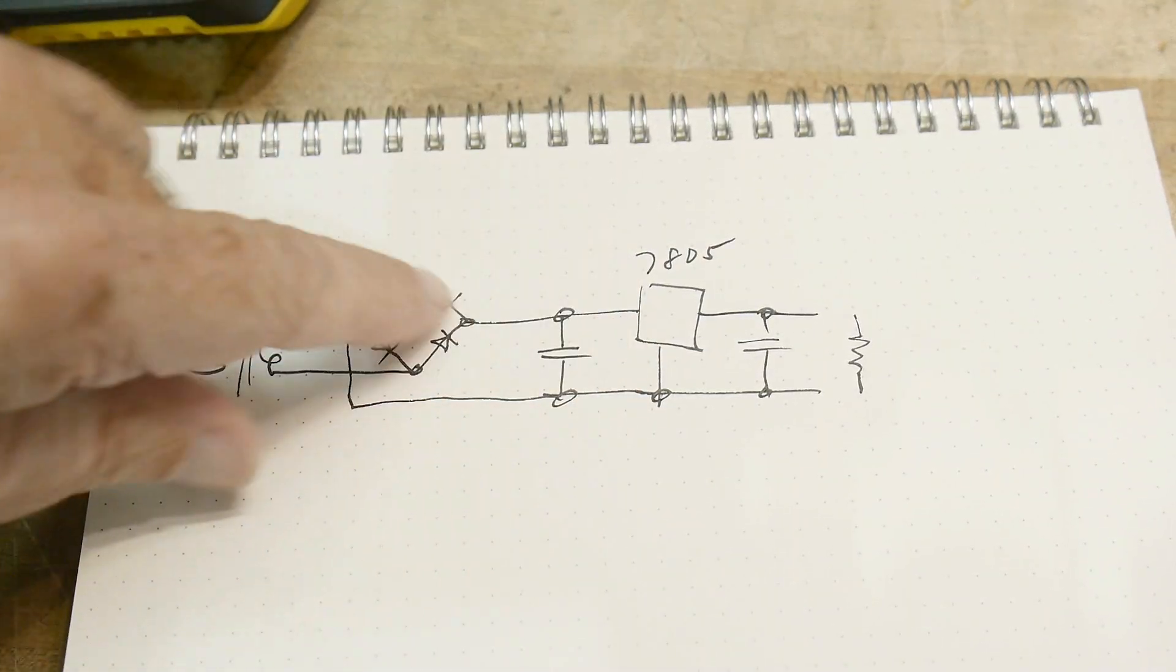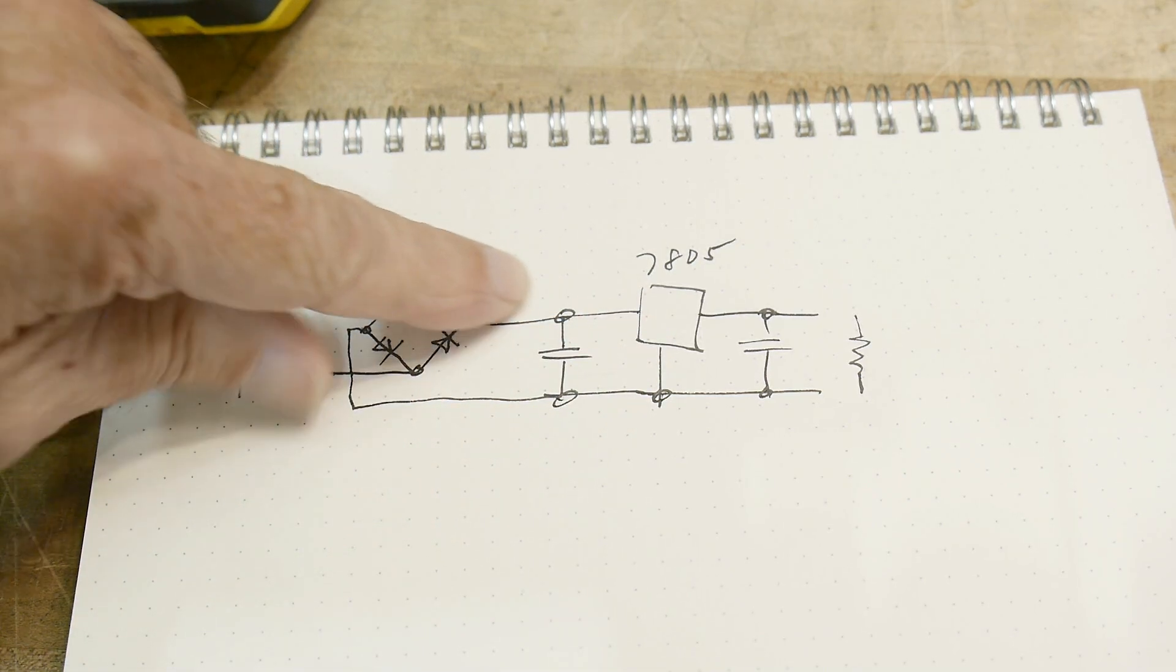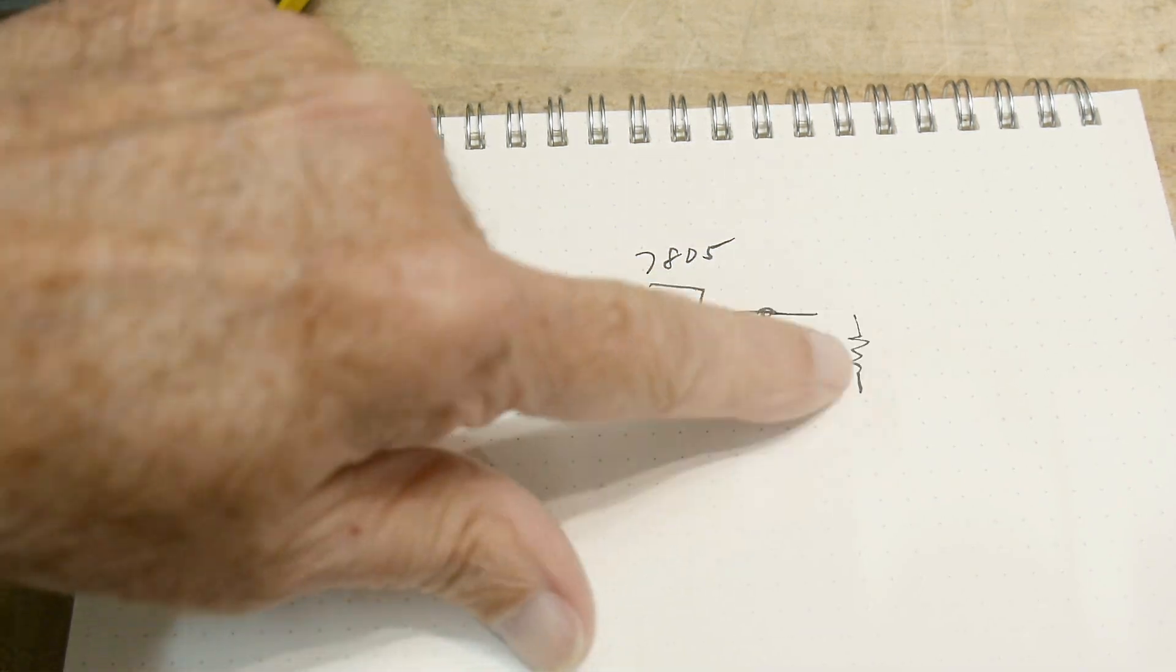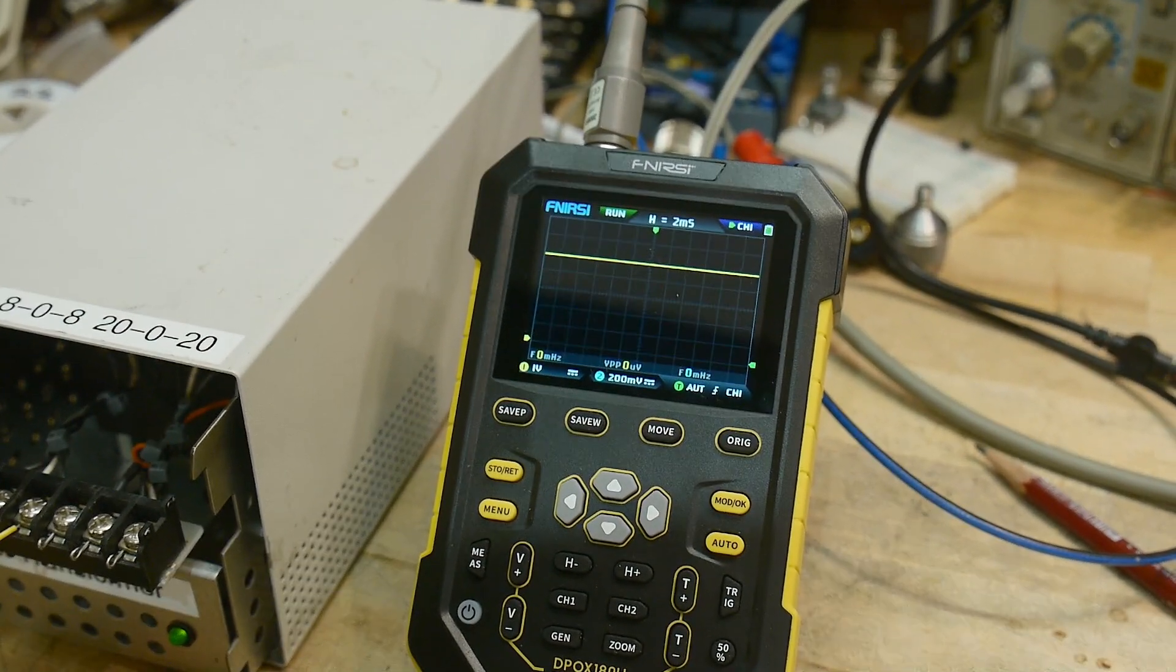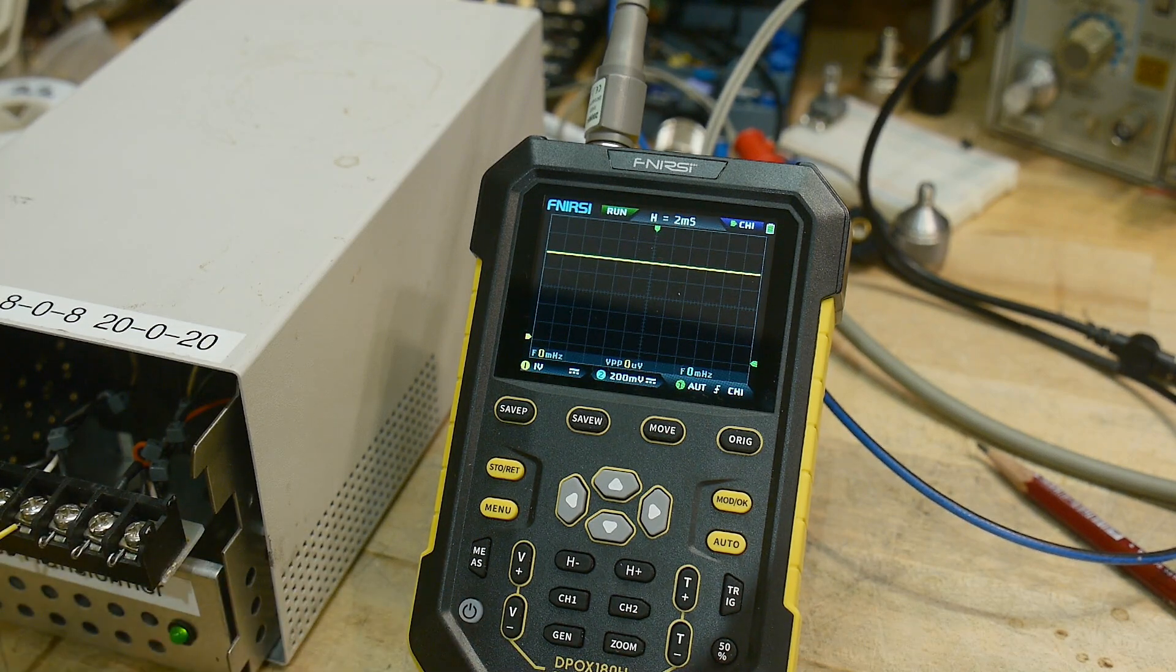But right now I have no load. So the only load that's in the circuit is there's a little bit of current that goes this way. So there still is a circle, it's going this way but it's nothing out here yet. But let's put a load on it.